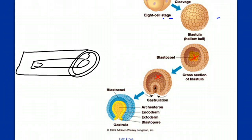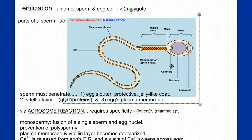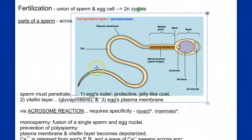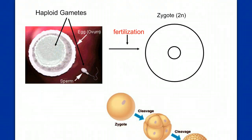Let's start at fertilization and look at an individual sperm cell. The sperm is not bringing a lot to the fertilization event — just a nucleus with half the genetic information, an acrosome filled with digestive enzymes, and mitochondria to power its movement. The egg provides the other cytoplasmic materials to get the new zygote up and running after fertilization.